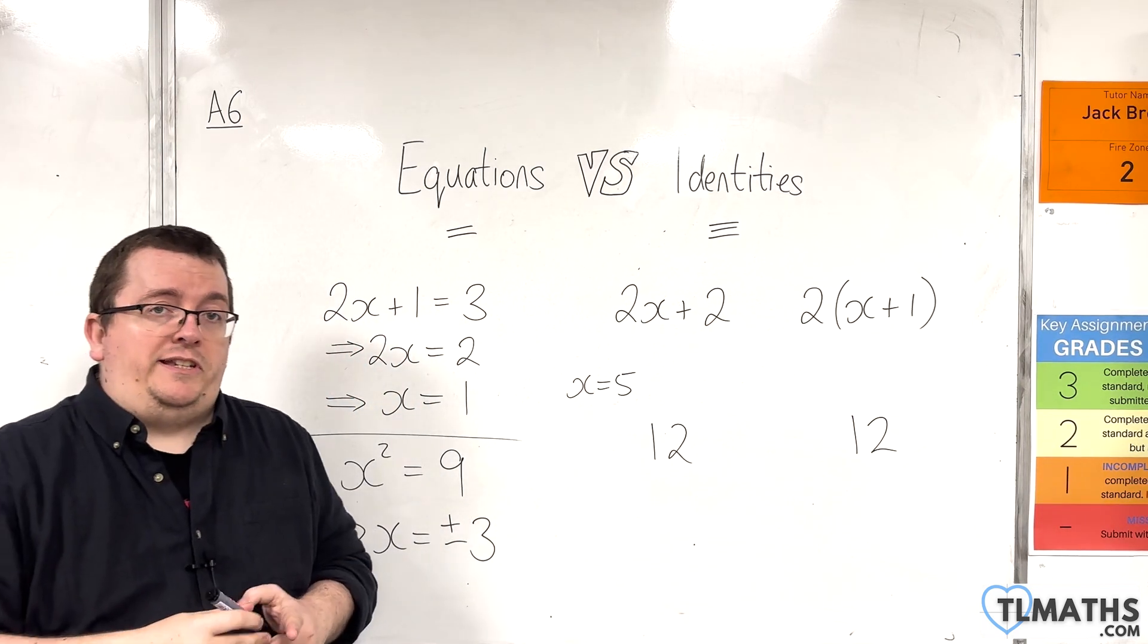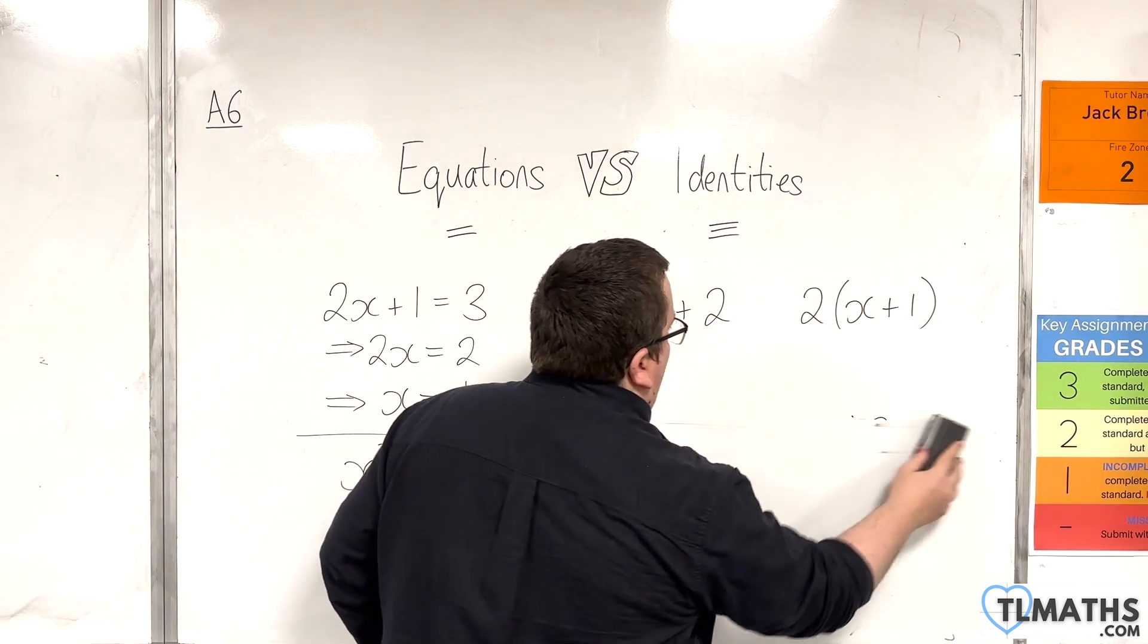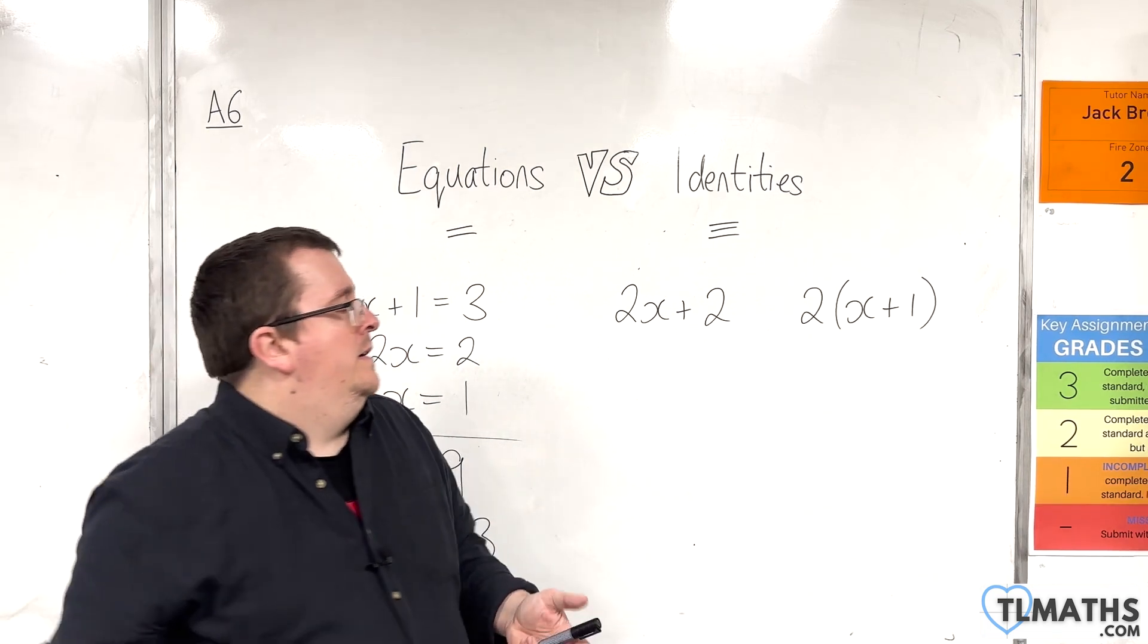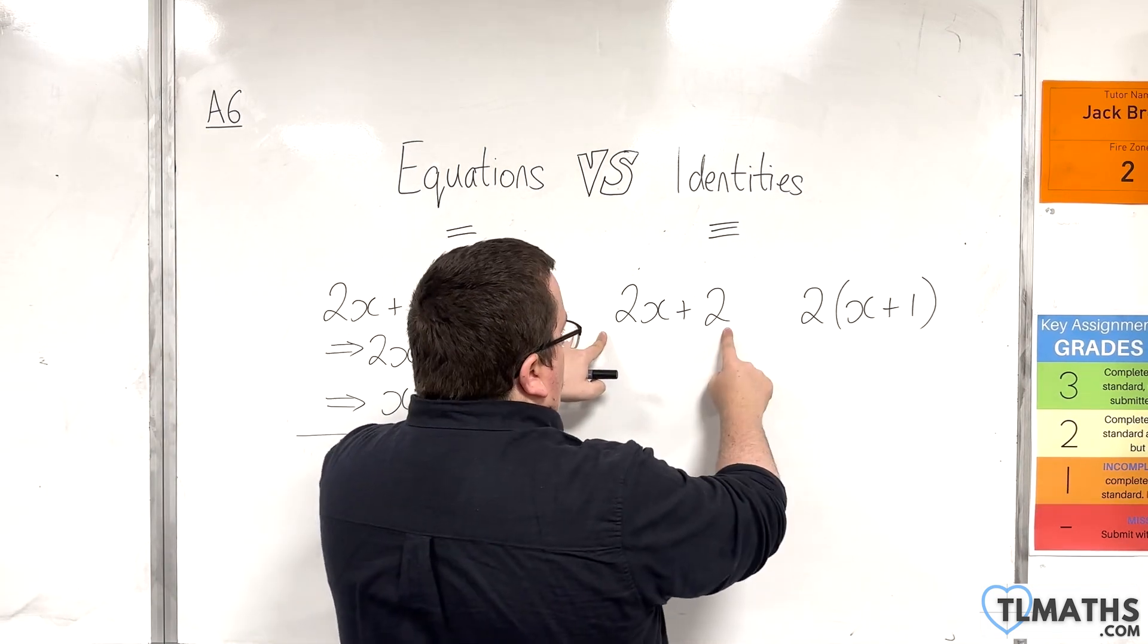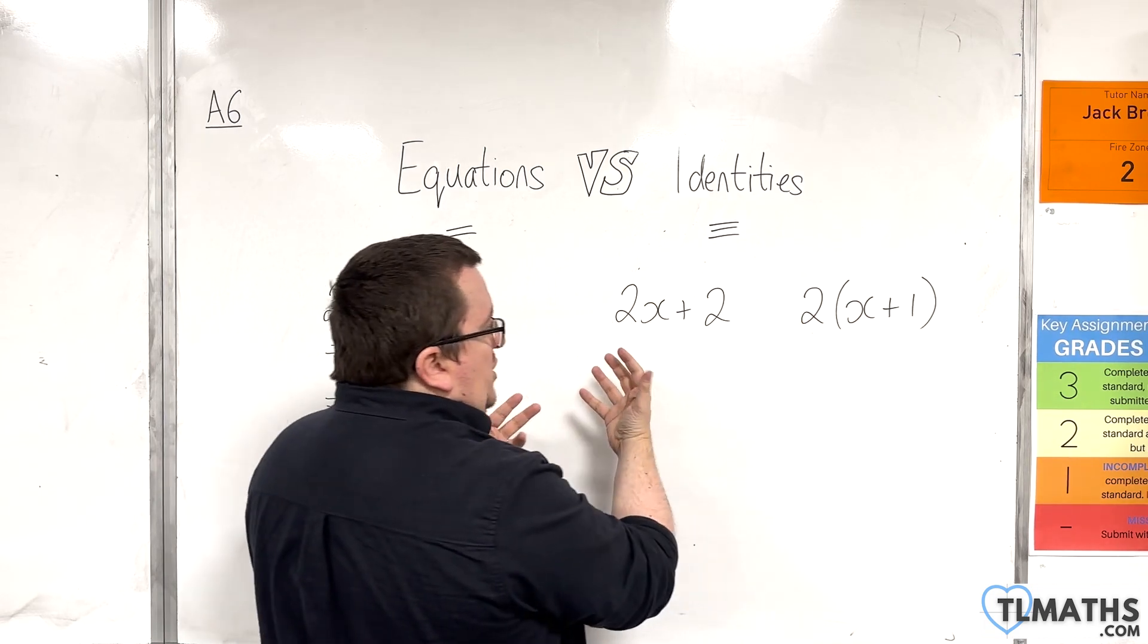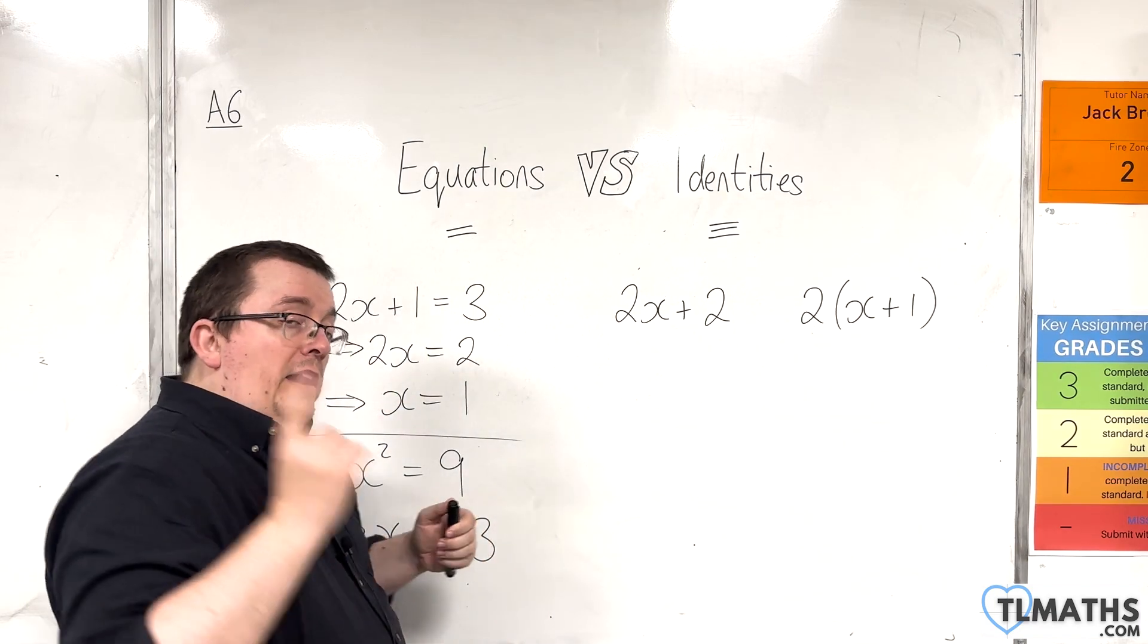We should be able to look at those two expressions and say to ourselves, well, they have to be the same. Because if I were to factorise this, I would get this. I would factor the 2 out of both terms, and I'd have x + 1 in the bracket.